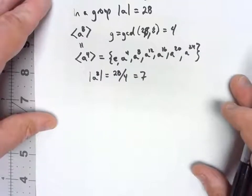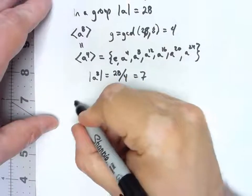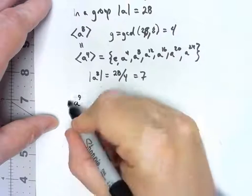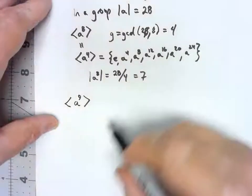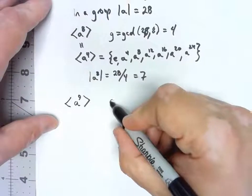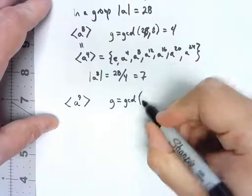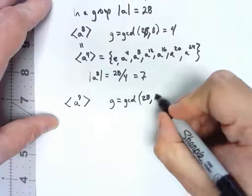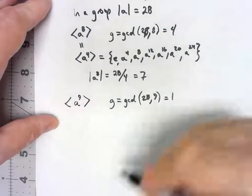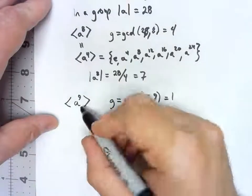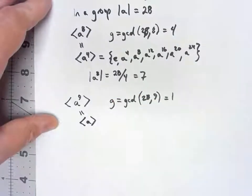Okay, let's try another one. What about a^9? And I want to look at the subgroup generated by that. Well, if I say g, that would be the GCD, the greatest common divisor of 28 and 9, which is 1. So the subgroup generated by a^9 is the same as the subgroup generated by a.